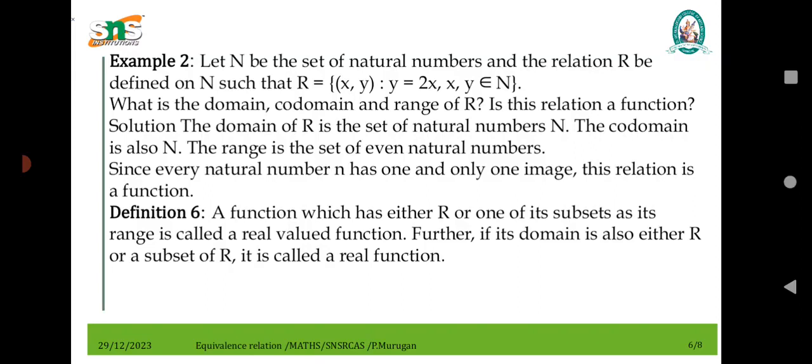Example: (X, Y) where Y equals 2X. The domain is the natural number system, co-domain is also the natural number system, so every even natural number is the range. It is a function.